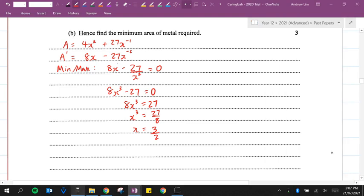You cannot just use that and then work out what the minimum area is because it could be a maximum. So what we need to do is we need to prove, we need to show that this is a minimum and not a maximum. So what I'm going to do is I'm going to find A double dash. When we differentiate this now, what do we get? 8 plus 54x to the power of minus 3.